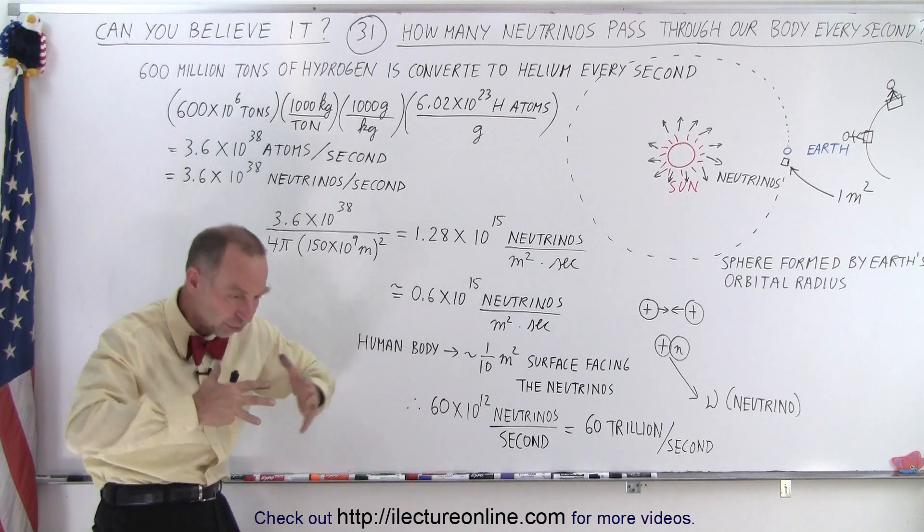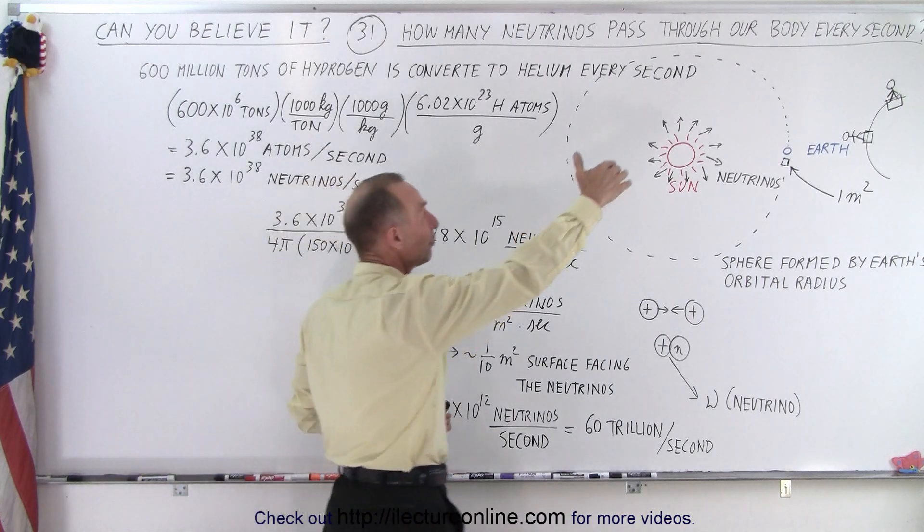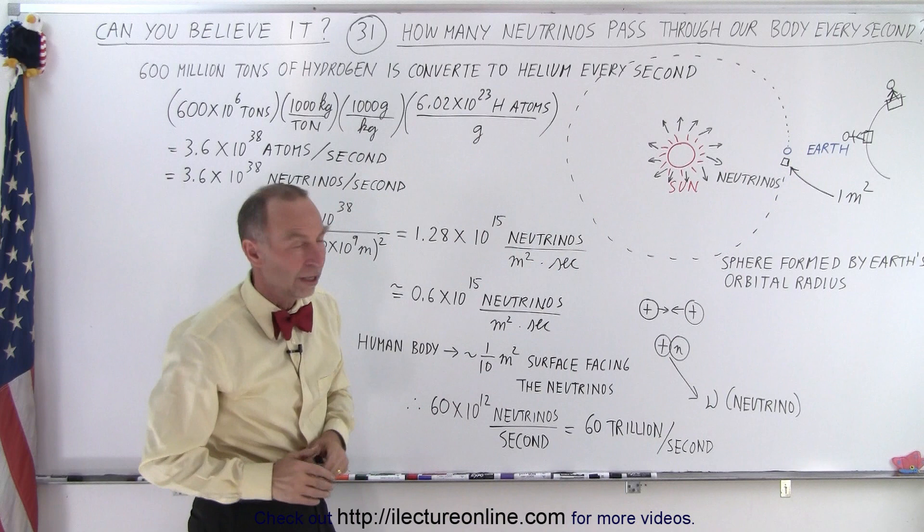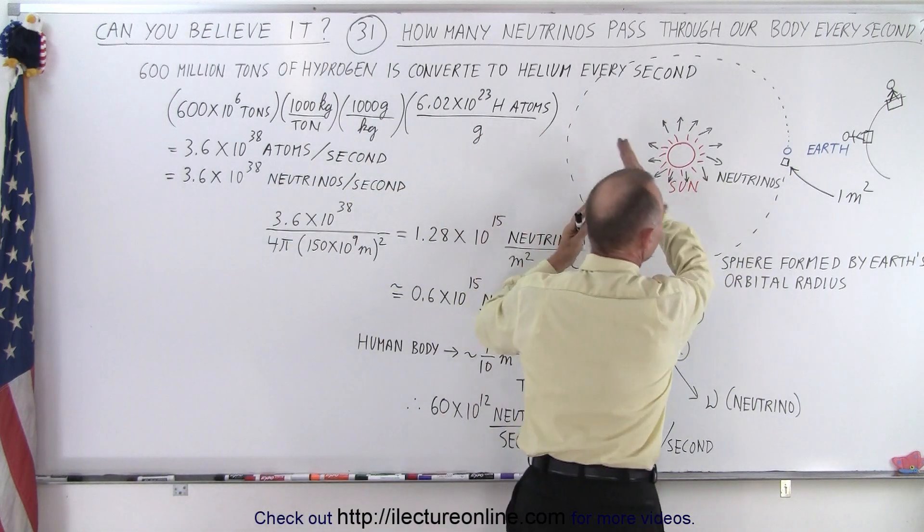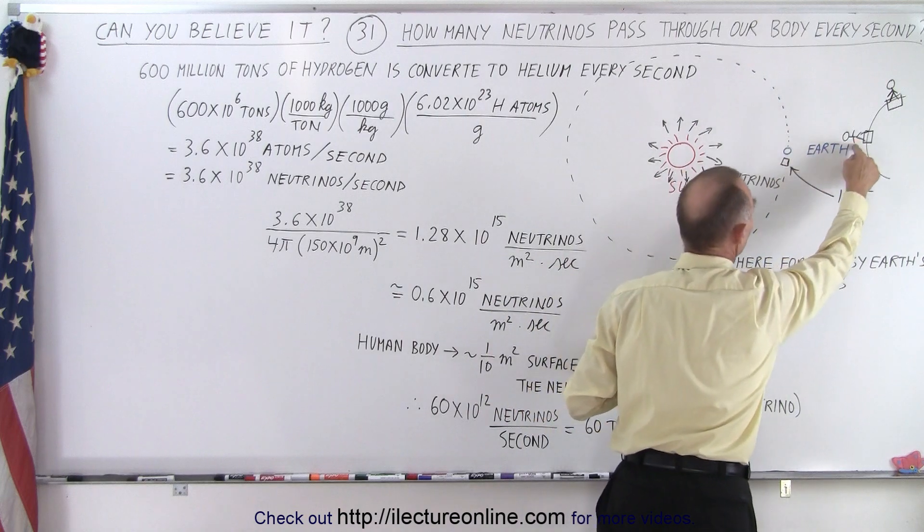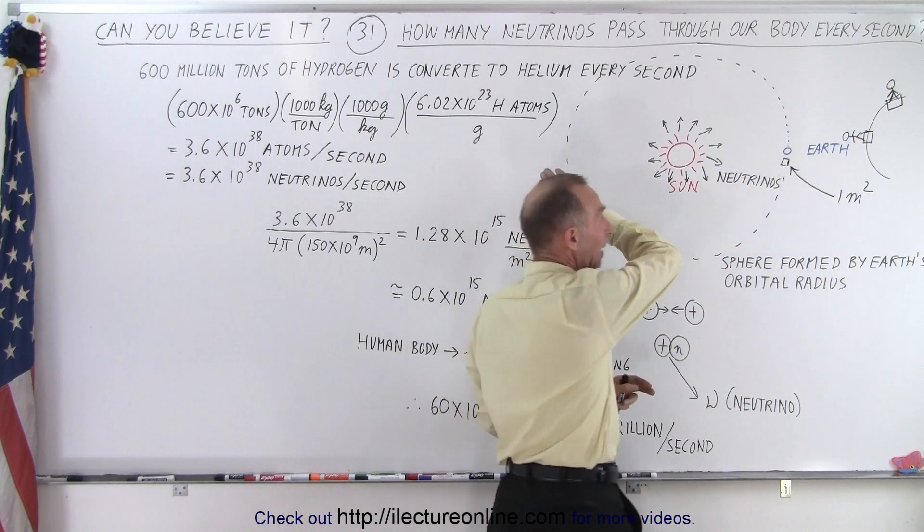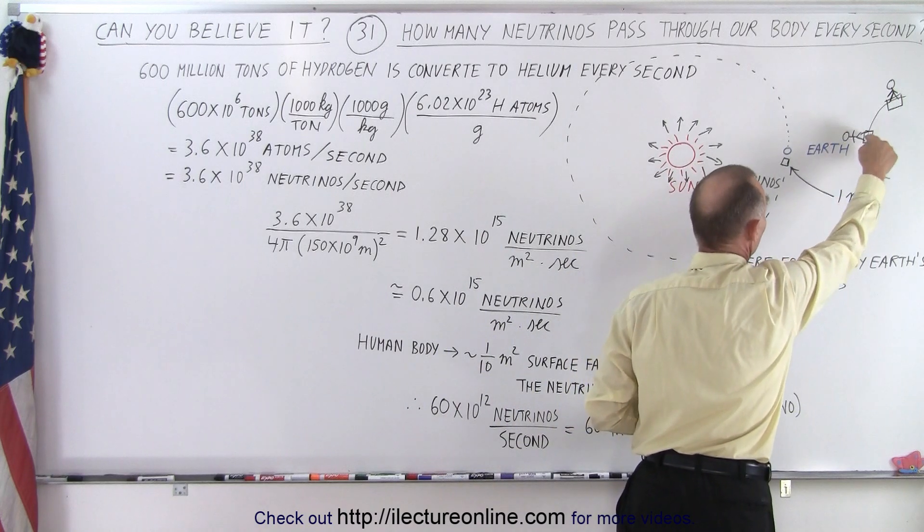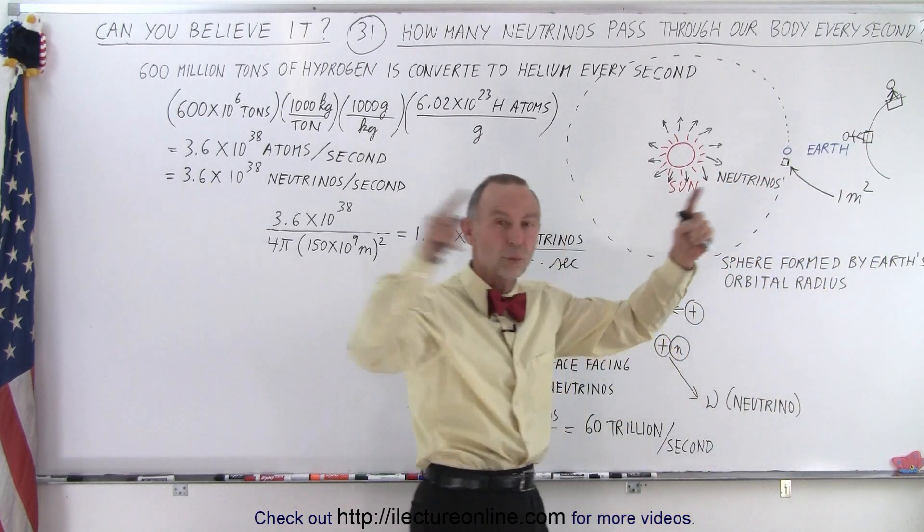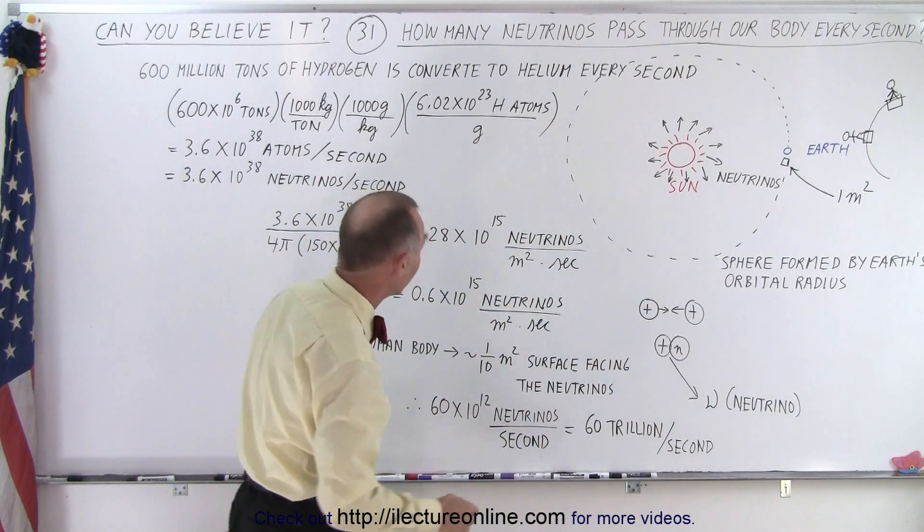And so, therefore, 3.6 times 10^38 neutrinos are created in the Sun every single second through that nuclear fusion process. And those neutrinos just spread out in all directions from the reaction and leave the Sun and permeate into the Universe. And of course, anything that's in the way gets hit by those neutrinos, including the Earth, including the person standing on the Earth.